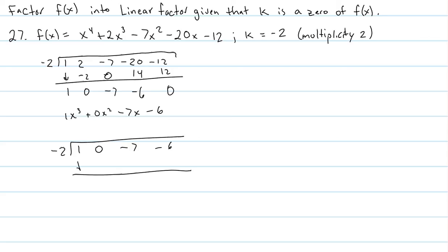We drop down the 1. So, we have negative 2 times 1 is negative 2. We add them. 0 minus 2 is negative 2. Negative 2 times negative 2 is positive 4. When we add those, we get negative 3. Negative 2 times negative 3 is positive 6. And, again, we have 0 as our remainder, which is very important.